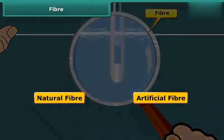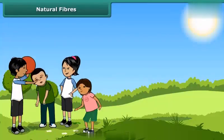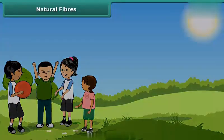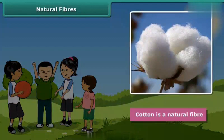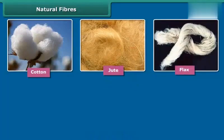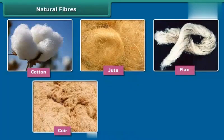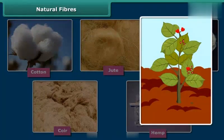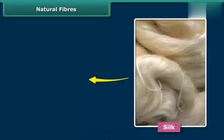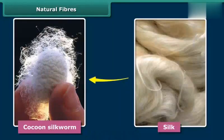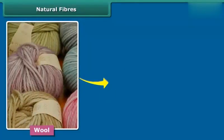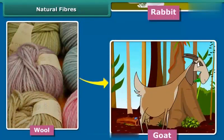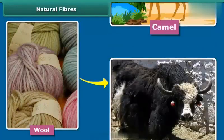Fibers can be both natural or artificial. You feel so comfortable when you wear cotton clothes in summer. Cotton is a natural fiber. Natural fibers like cotton, jute, flax, coir, hemp, etc. are obtained from plants. Silk fiber is drawn from the cocoon of a silkworm. Wool is obtained from the hair of animals like sheep, goat, rabbit, yak, and camel.